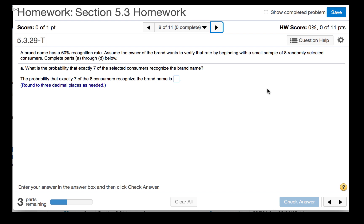What is the probability that exactly 7 of the selected consumers recognize the brand name? We have a binomial distribution since we only have 2 possible outcomes: there is recognition or there is not. We have a finite number of trials - 8 randomly selected consumers. And the probability of a success is consistent from trial to trial. We are told that the brand name has a 60% recognition rate.